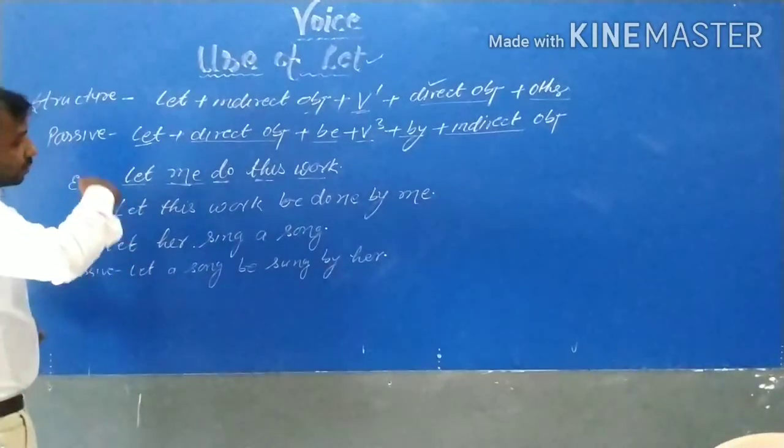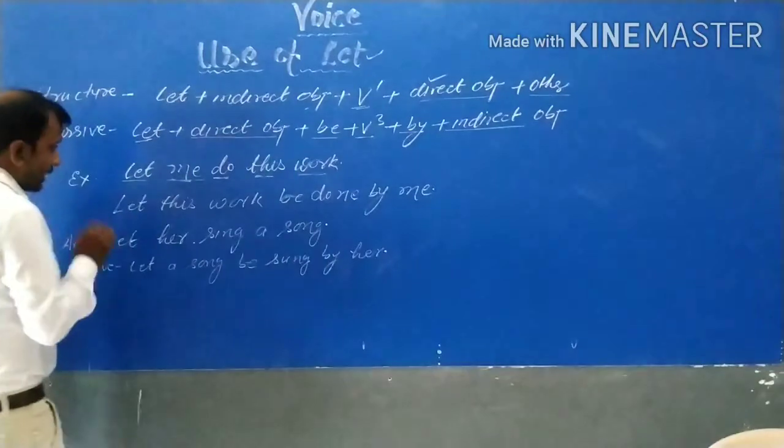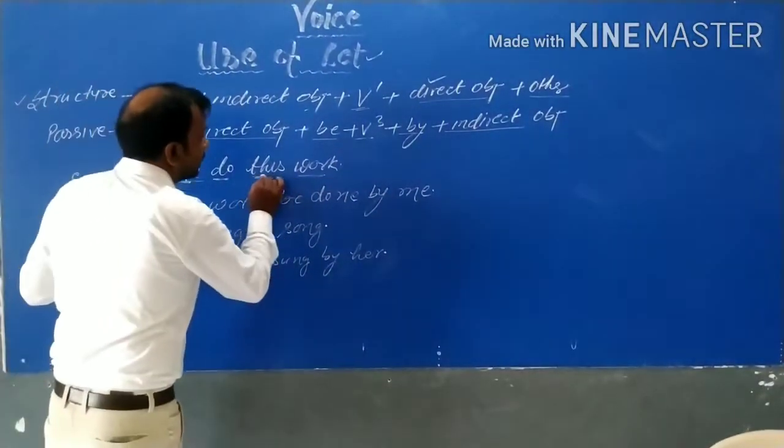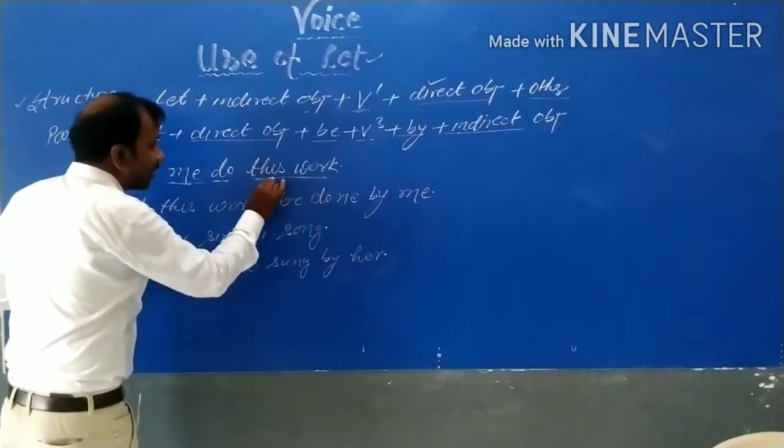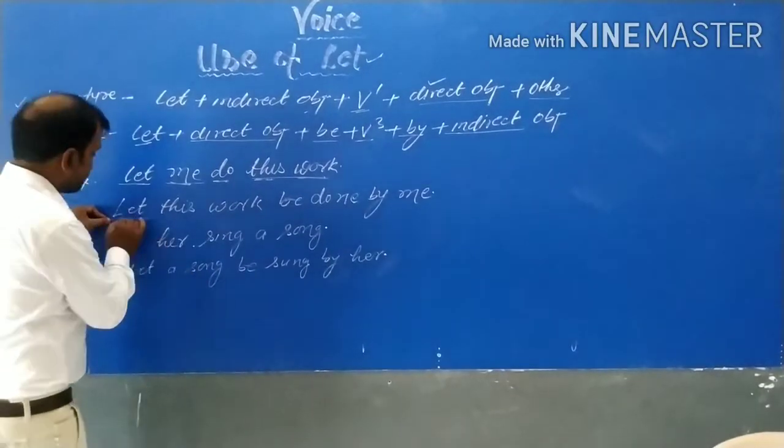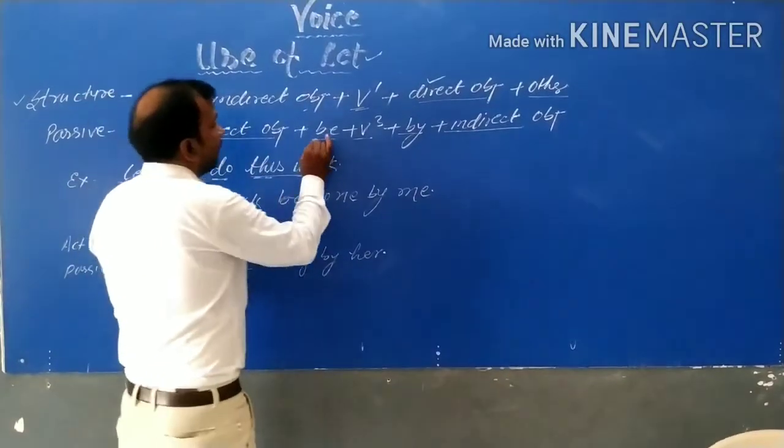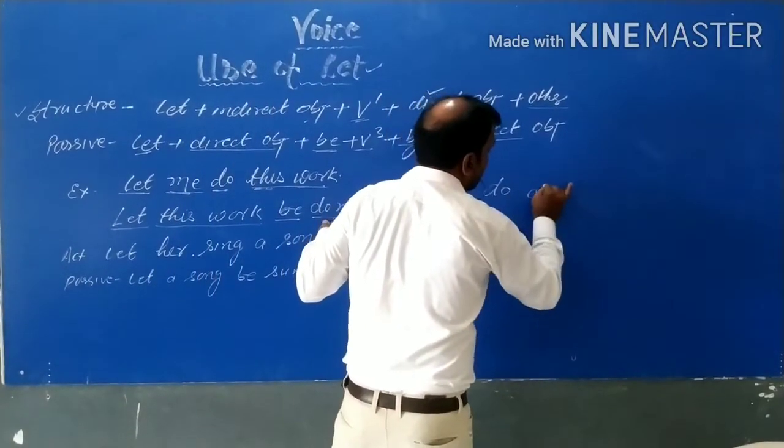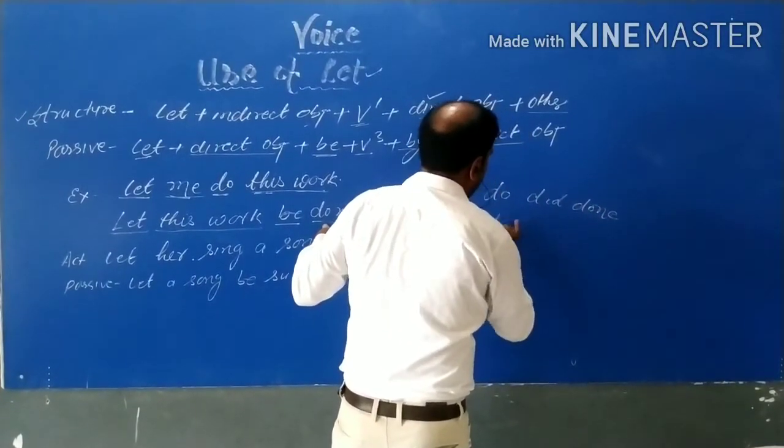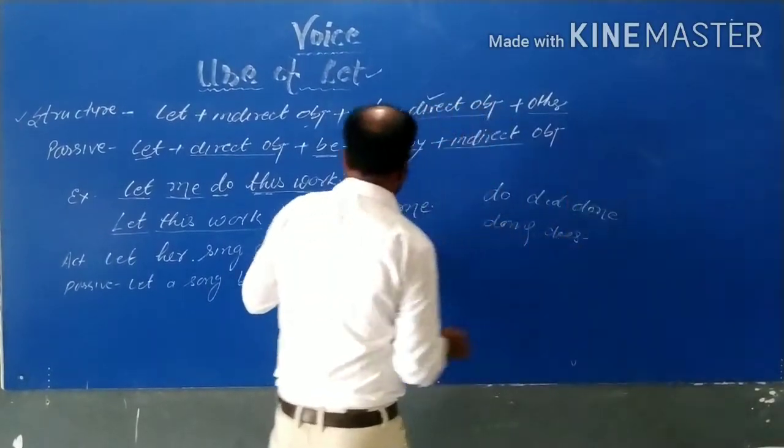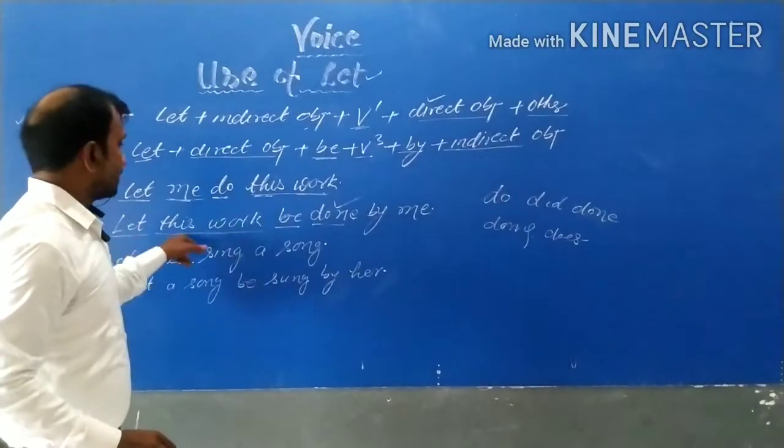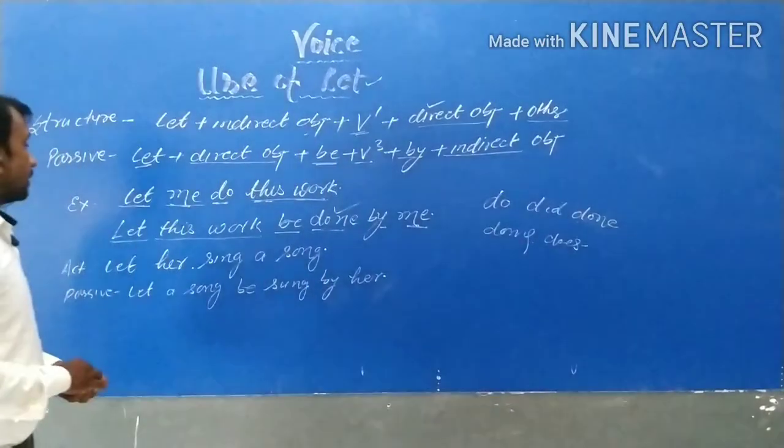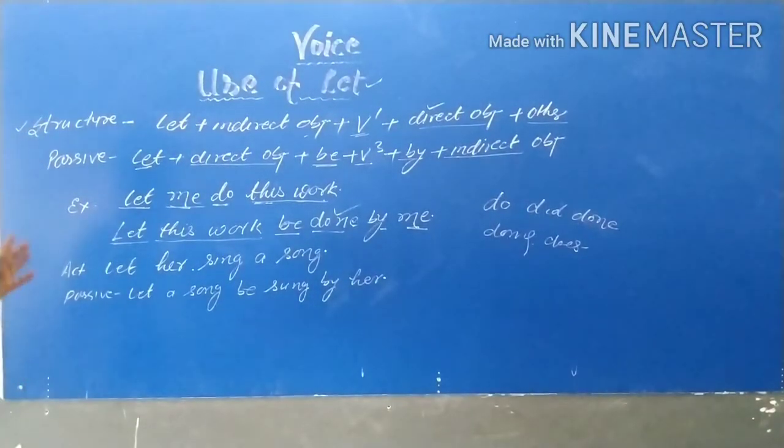Let me do this work. Here if I compare with this structure then let is used here, then indirect object. This is indirect object retained just beside your let. This is known as indirect object and these are mainly possessive objects. So let me, then work of first form, do this work. This is non-finite and this is known as direct object. So when we try to convert this sentence to passive, then we have to write let at its place. And after this, this word, this is an indirect object. And indirect object will be written just beside let. So let this word, then be. We have to write be. Then word of third form, do, the word of third form done. Let this word be done by me.